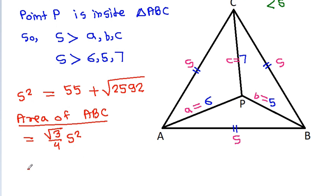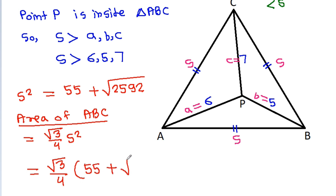The area of triangle ABC equals s squared times square root of 3 divided by 4, which equals square root of 3 divided by 4 times the quantity 55 plus square root of 2592.